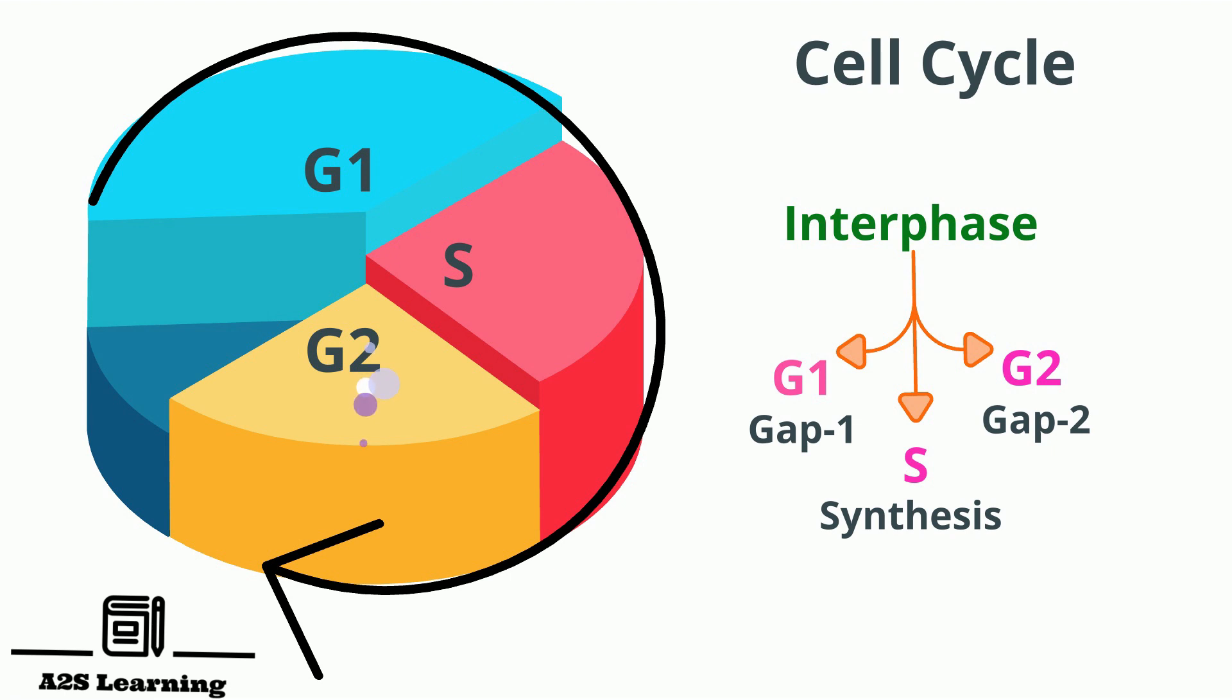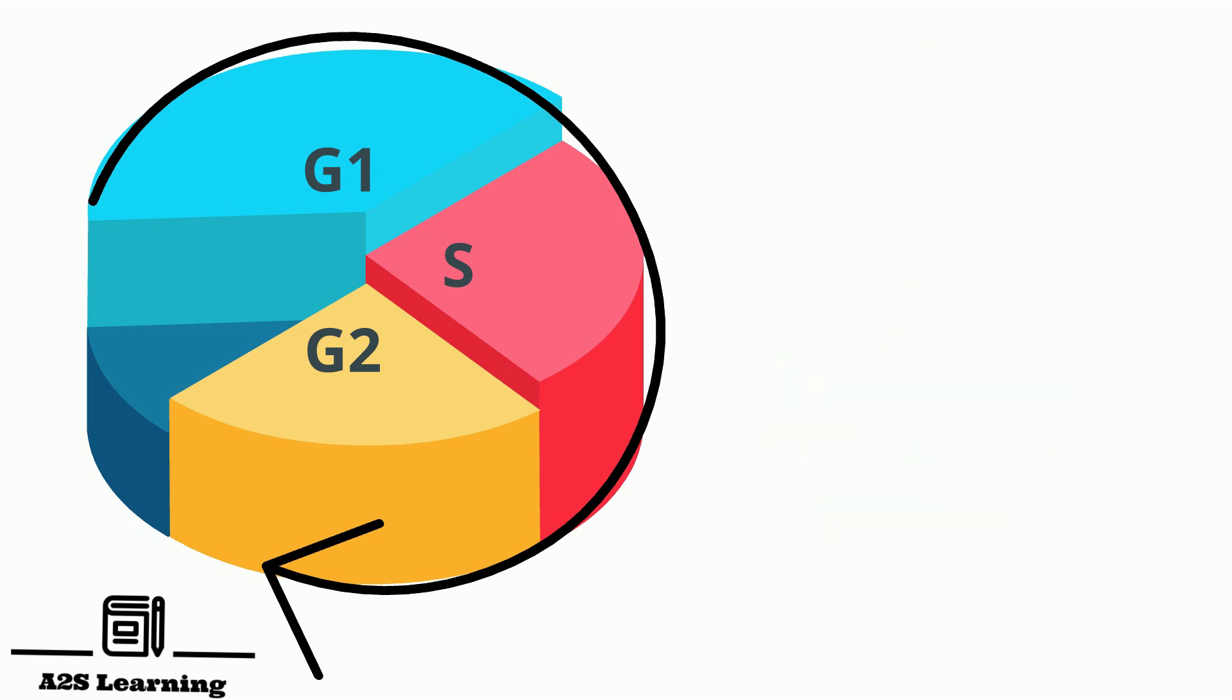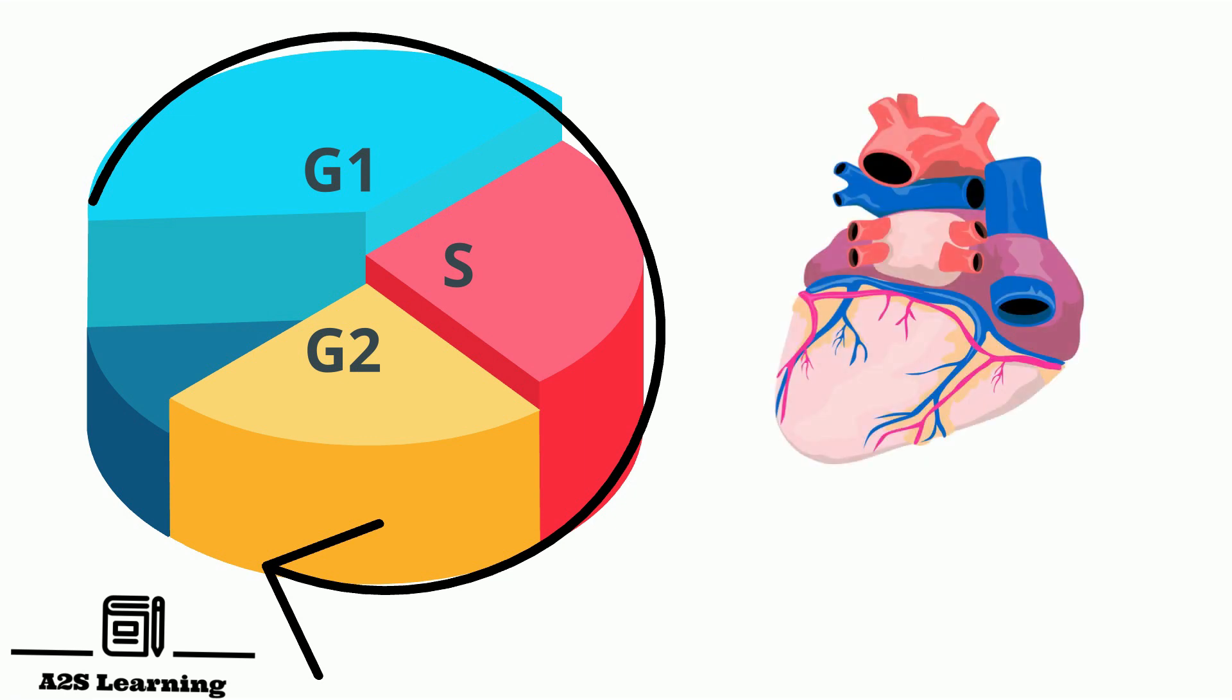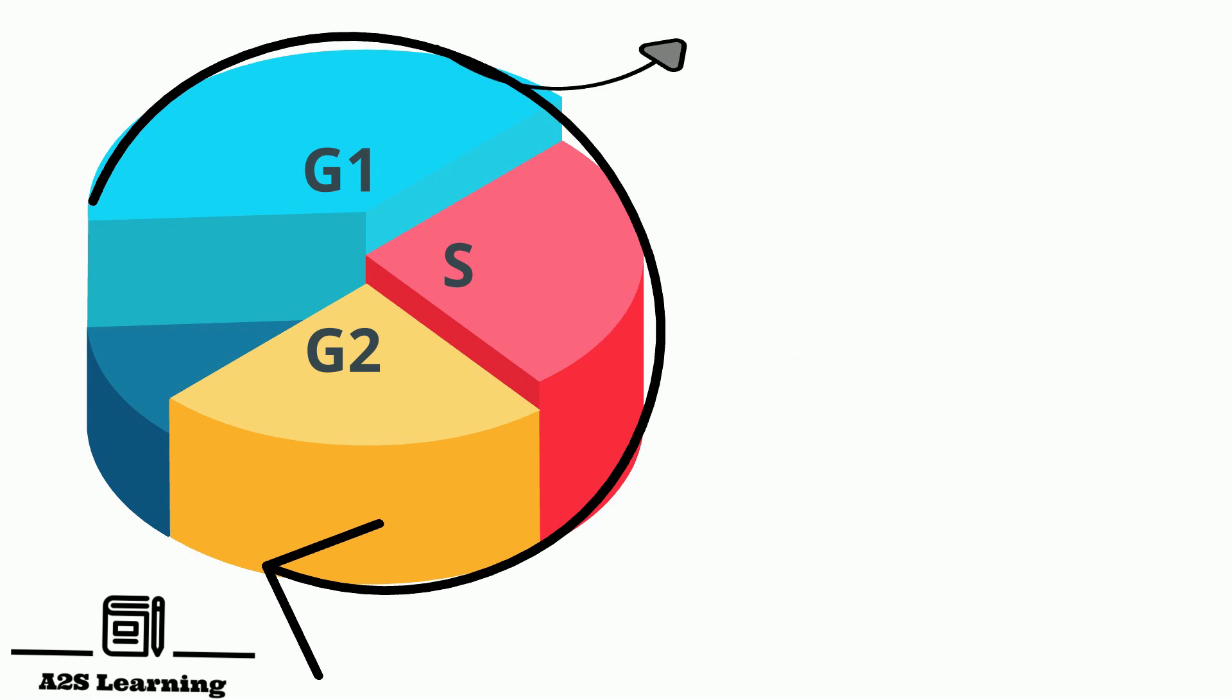Proteins and enzymes are synthesized in preparation for cell division. Some cells in adult animals do not appear to exhibit division. For example, heart cells and many other cells divide occasionally. Such cells exit from G1 phase and enter an inactive stage called quiescent stage which is also called G0 stage.